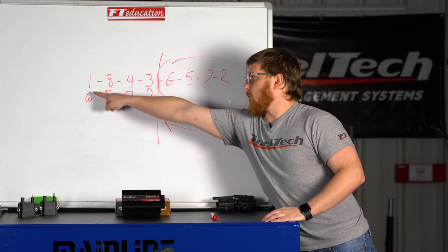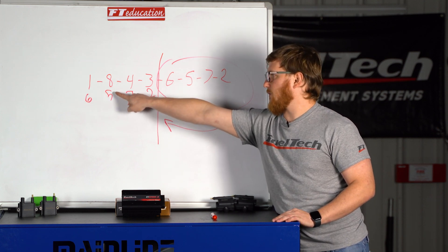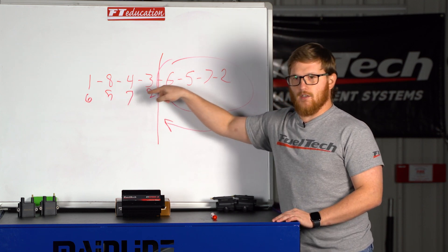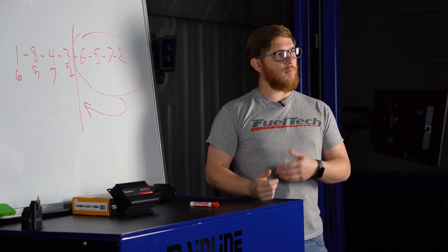So you would have one output that would be attached to one and six at the same time, one output that would be attached to eight and five at the same time, and so on. That makes it so you only need four outputs to control a V8 with coil-on-plug.